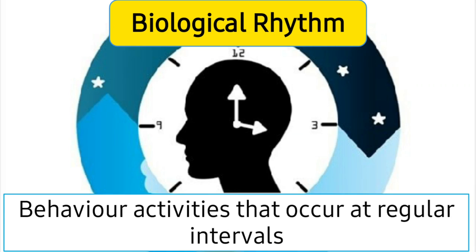Moving on, let's talk about biological rhythms. A rhythm is any kind of thing which repeats itself in a cyclic manner — any activity that occurs at proper, regular intervals. A biological rhythm means that in living beings, activities or behaviors that occur at regular intervals are called biological rhythms. A common example is our breathing, as a normal human being breathes in and breathes out at regular intervals.